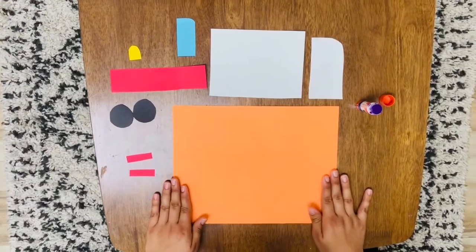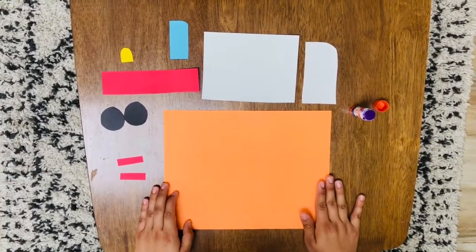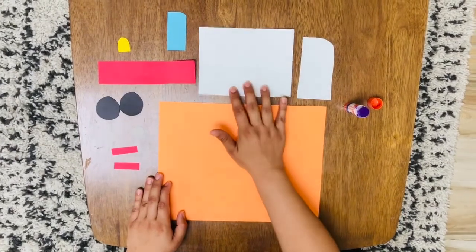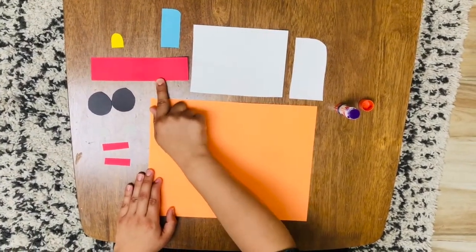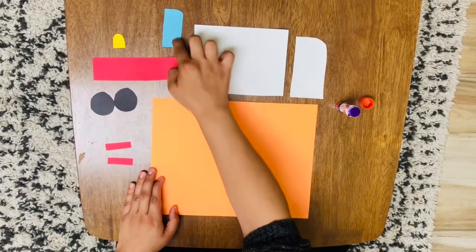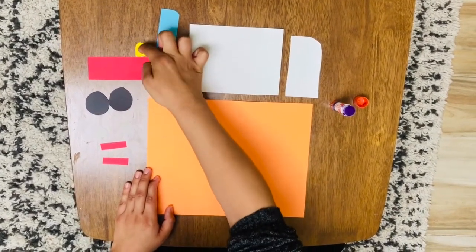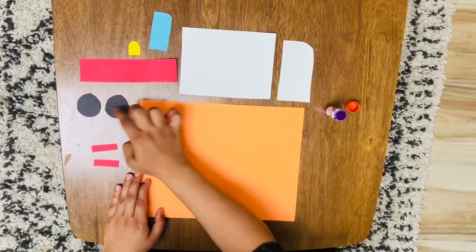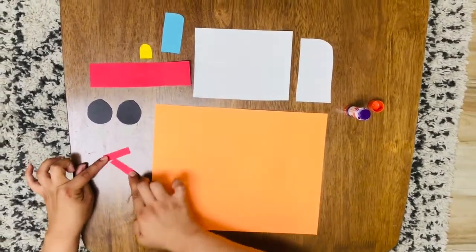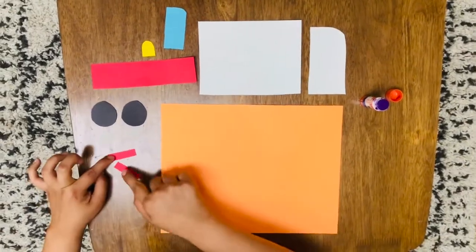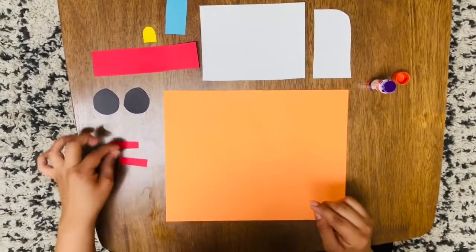Let's get started. Okay guys, so we're going to get started on our ambulance art. So you have a big rectangle, another white piece, a long red rectangle, a blue piece, your siren which should be yellow, and then two black wheels, the tops of the wheels, and two small red rectangles which is going to make your plus. Alright, so let's get going.